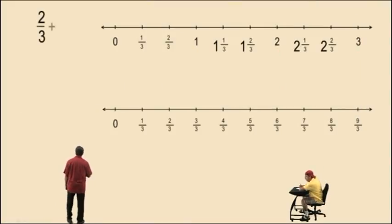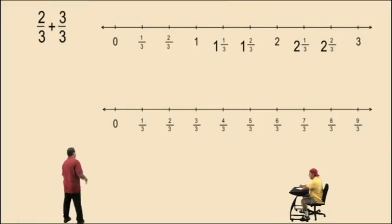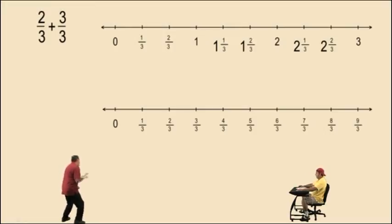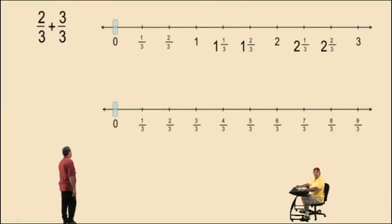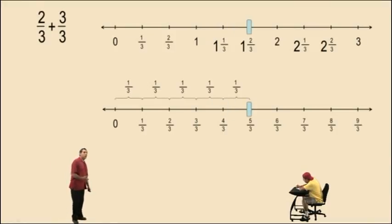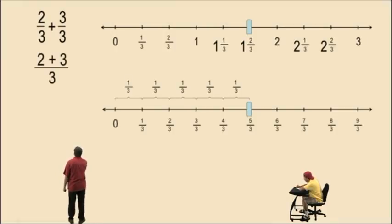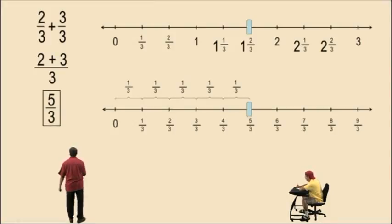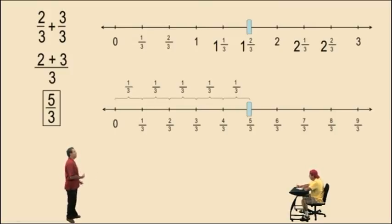Now, let's try some problems. We have 2 thirds plus 3 thirds. Charlie, if you have 2 thirds and somebody gives you 3 more thirds, how many thirds do you have? 5 thirds — that's it, it's that easy! So if we have 2 thirds and we add 3 more thirds, we obviously end up at 5 thirds. How do you show your work with the calculation? Well, we have thirds and we work with the numerators. We simply say 2 plus 3 and put that in our numerator — and 2 plus 3 is equal to 5, so our answer is 5 thirds. So your denominator does not change.